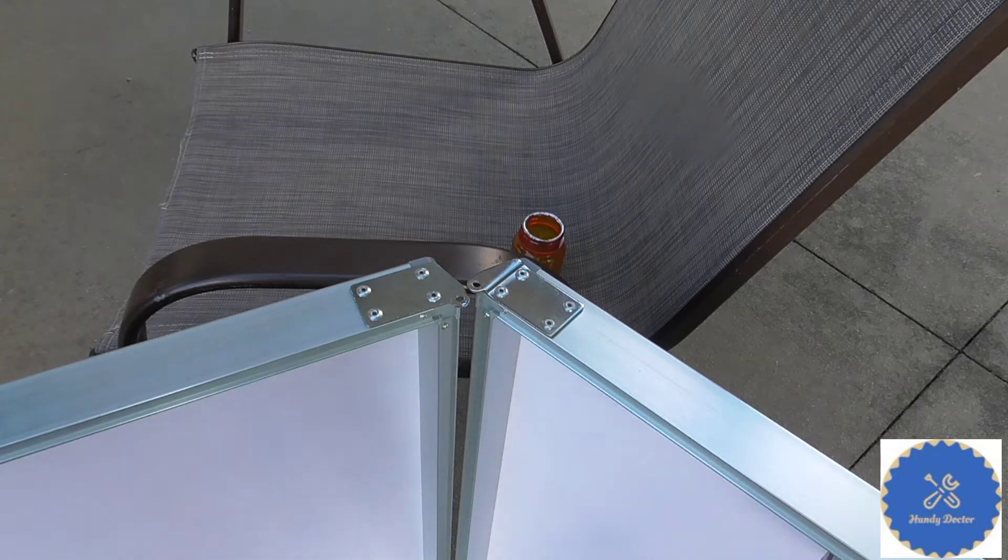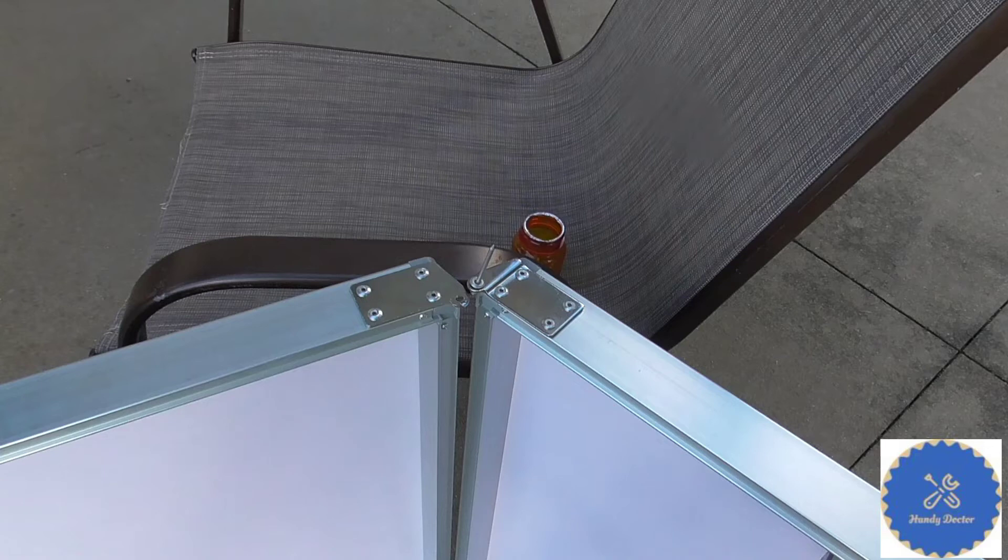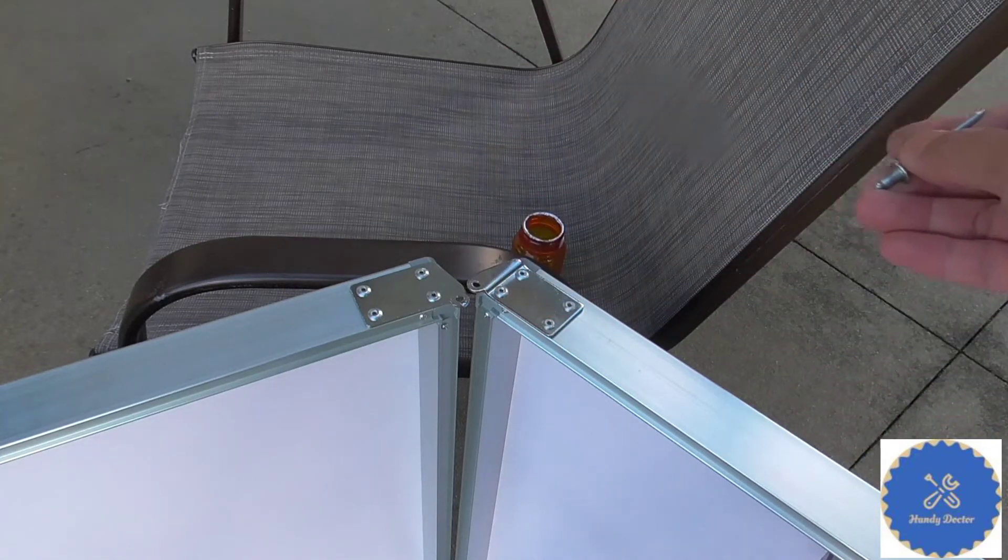Now, over here though, your rivet must be able to pass through the hole. And you want it to be as big as possible.